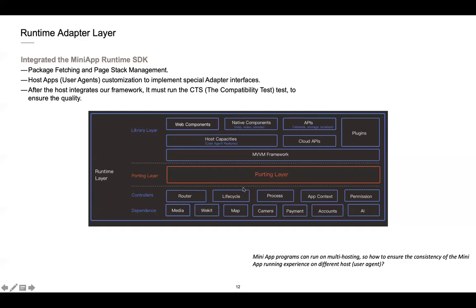I will introduce our runtime adapter layer. The MiniApp is an open ecosystem and we have a MiniApp runtime SDK. When different user agents integrate our SDK, they get package fetching and page state management functions. Host apps or user agents can customize which APIs or special functions they want to implement in their environment — this is the porting layer. After the host integrates our framework, it must use the CTS test to ensure the quality of the runtime.